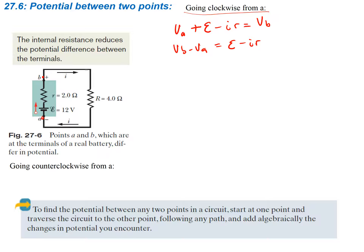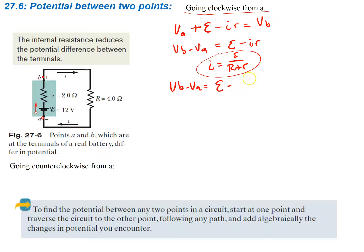Rearranging, we have VB minus VA — so this is our change in potential — is equal to our EMF minus our internal resistance times the current. We also know that our current is just going to be the EMF divided by big R plus little r. We saw that result from earlier, so we use this and plug it in for our current.